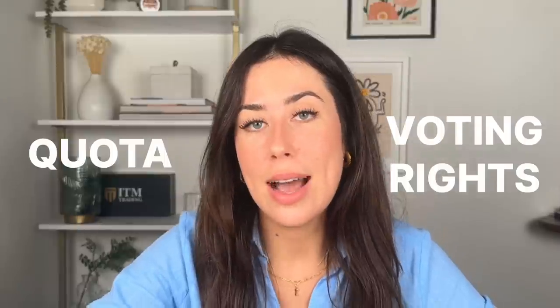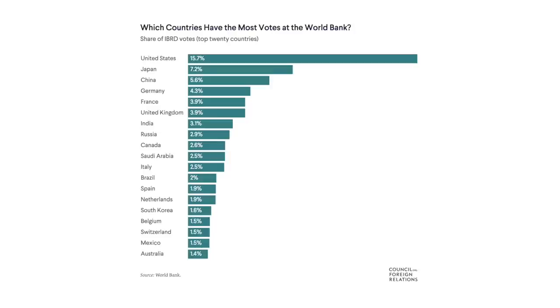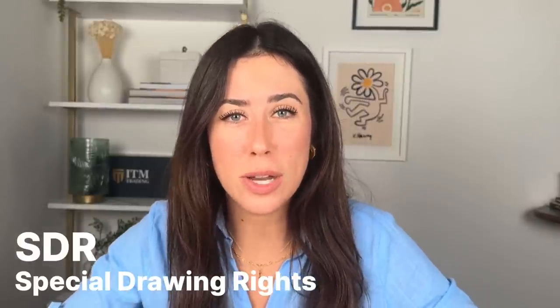There are multiple reasons BRICS countries feel the World Bank and IMF are not fair. One is quota and voting rights — the higher your quota, the higher your voting rights. The United States holds the largest percentage at 16.5%, far greater than the next largest, Japan, at 6.14%. BRICS countries have created their own New Development Bank as an alternative to the World Bank, hoping it can provide loans and support without so many policies and strings attached.